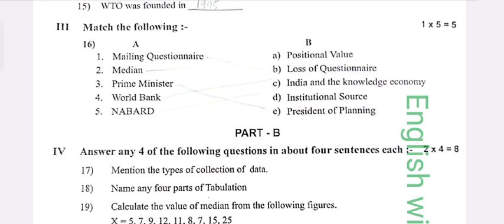Third section — Match the following: Mailing questionnaire, loss of questionnaire, median, positive value, Prime Minister, President of Planning, World Bank, Indian art, knowledge economy. Numbered institution source.